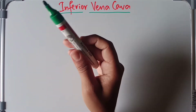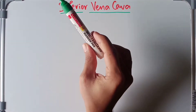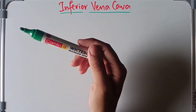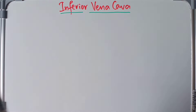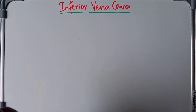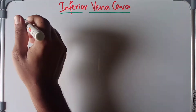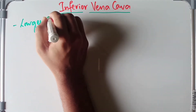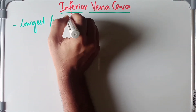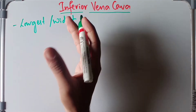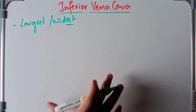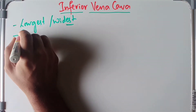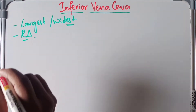Welcome back. Today we will be discussing the anatomy of the inferior vena cava in terms of its formation, course, termination, relations, and tributaries. The inferior vena cava is the largest and widest vein of the body. It drains most of the blood from the body below the diaphragm and finally drains into the right atrium.